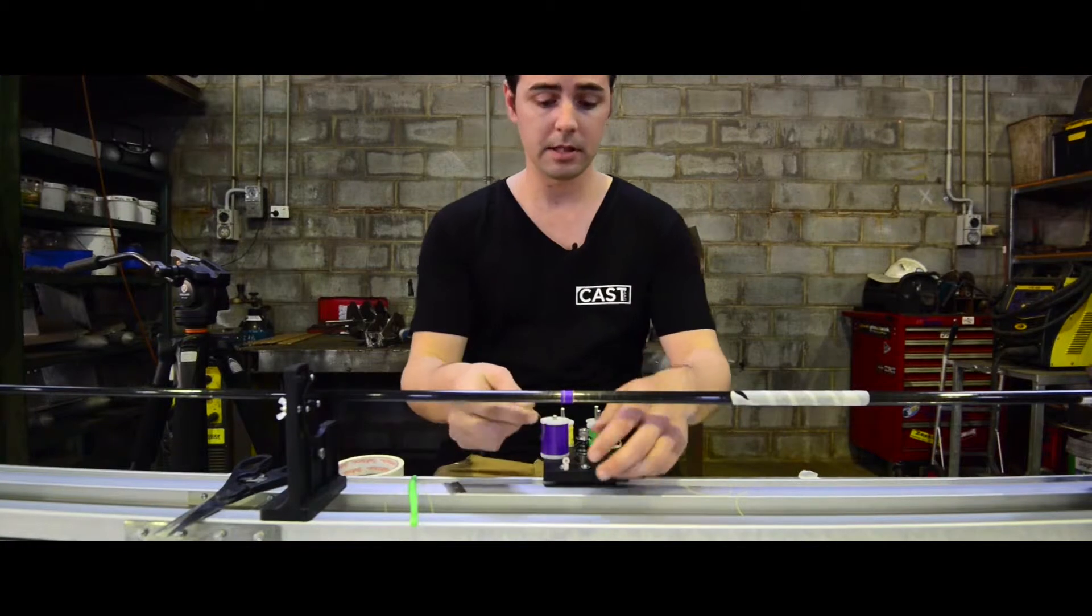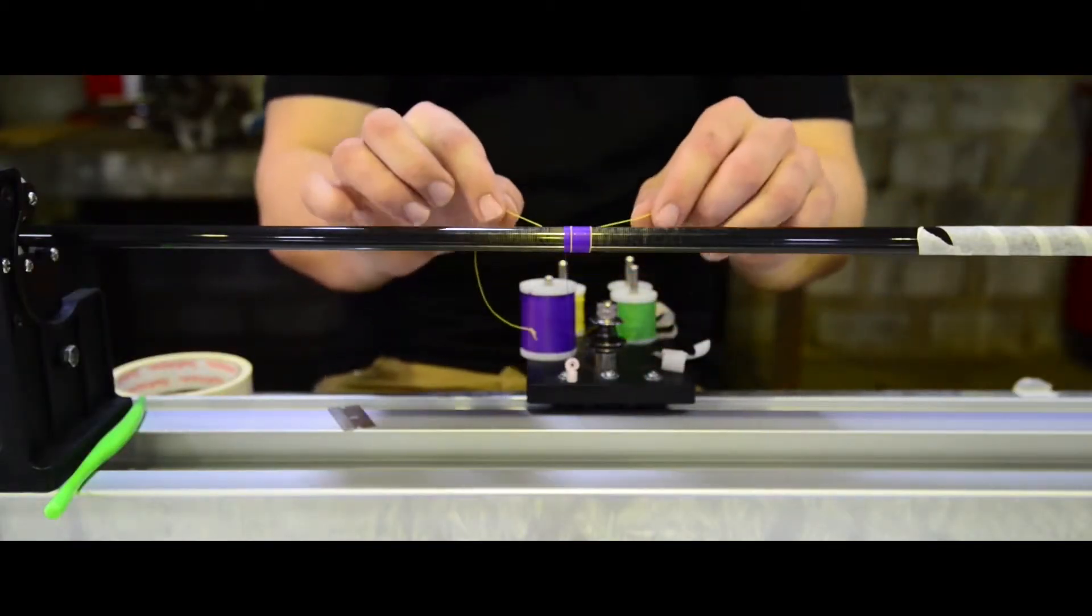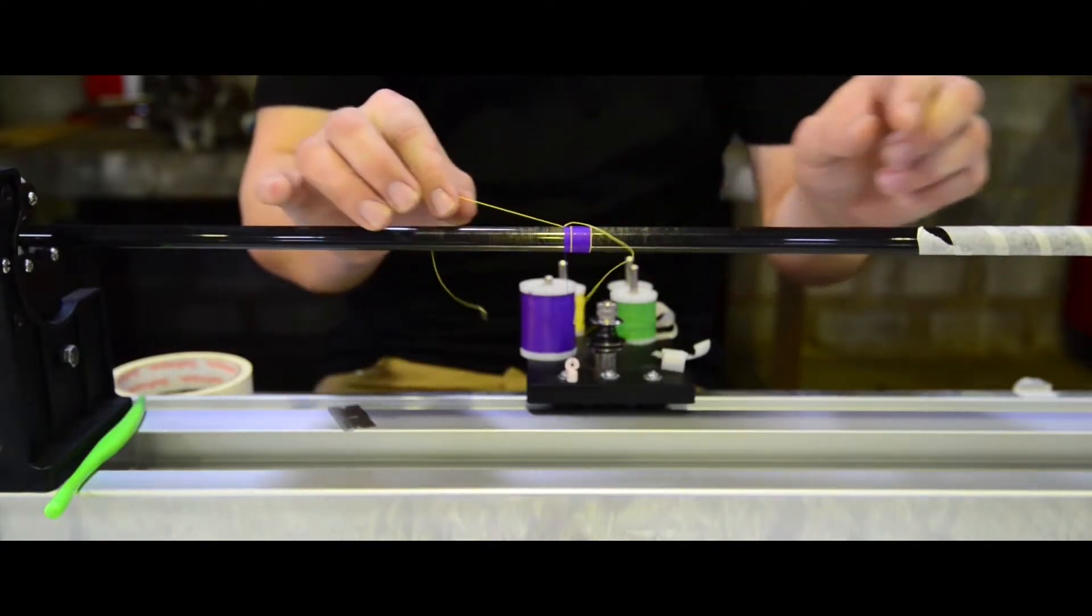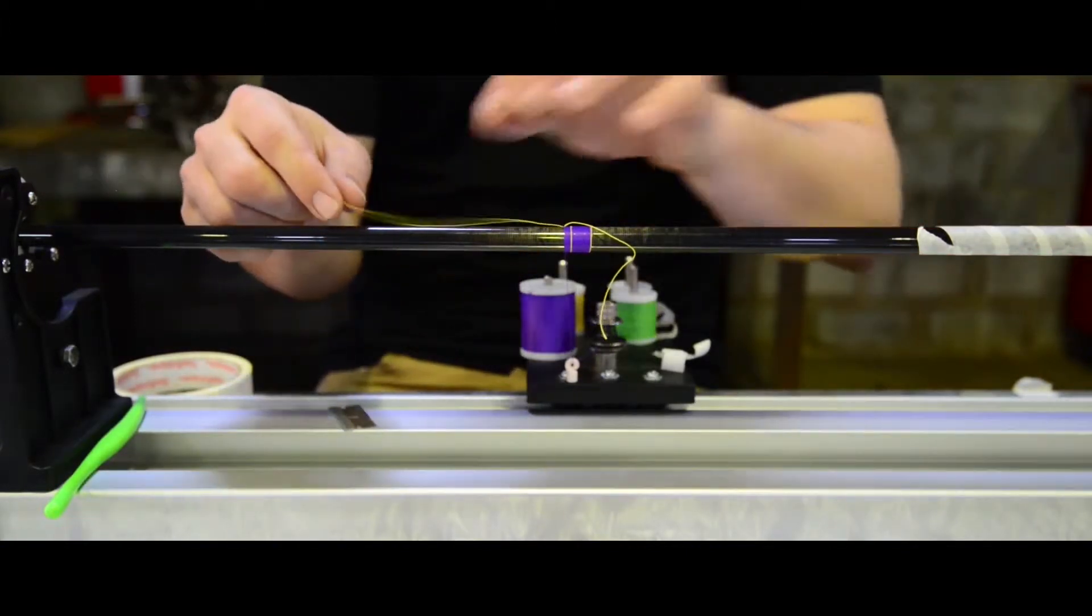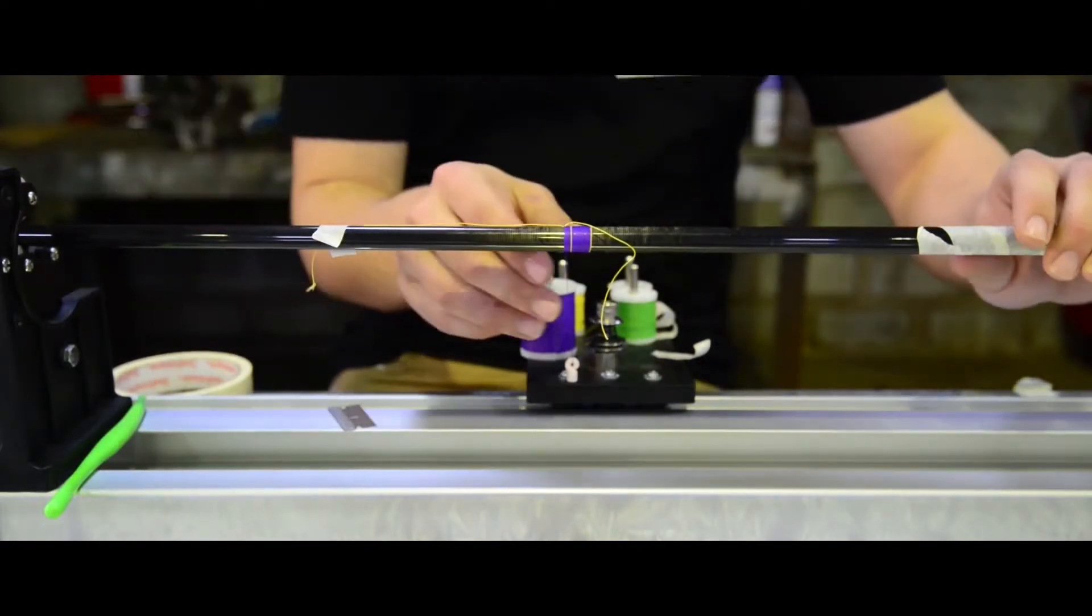You can start the process off the same way. Take in your trim color, slide it under the base again. Sometimes you may want to just take a bit of tape and stick down that tag end so you don't wrap over it.